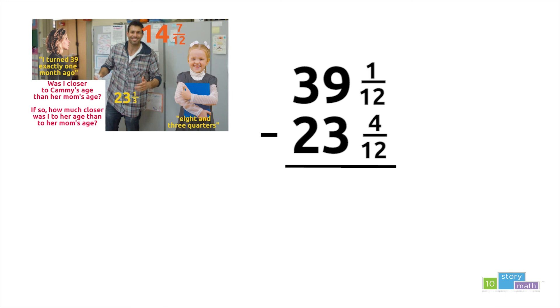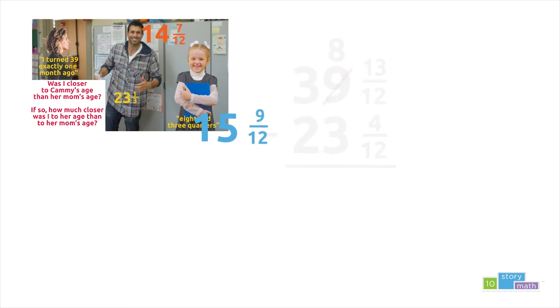Now to find the difference between the mom's age and my age. This time, I'm going to use subtraction with borrowing. I cannot do one twelfth minus four twelfths, so I'm going to borrow one whole from 39. That will leave me with 38. In this case, one whole is equal to 12 twelfths. So all together, I now have 13 twelfths. 13 twelfths minus 4 twelfths is 9 twelfths. 8 minus 3 is 5 and 3 minus 2 is 1. That means Cammie's mom is 15 and 9 twelfths years older than I am.